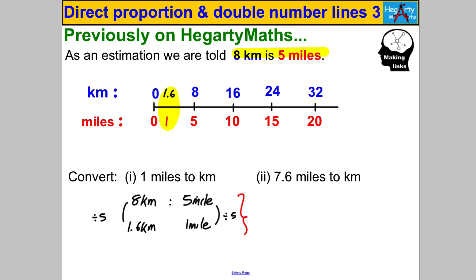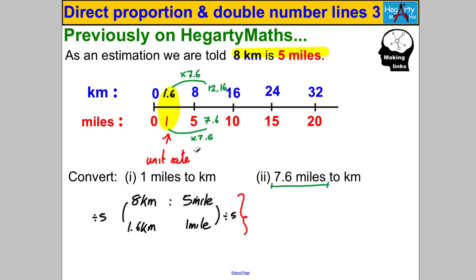One mile is 1.6 kilometres — that's the unit rate. To find 7.6 miles, multiply the unit rate by 7.6: 1.6 × 7.6 = 12.16 kilometres. So the process is: scale back by dividing by five to get the unit rate, then multiply by 7.6 to get the value you want.